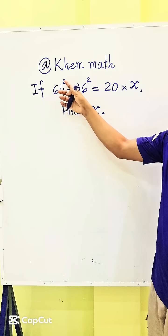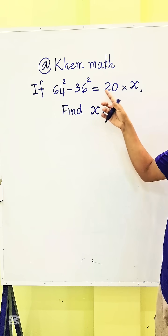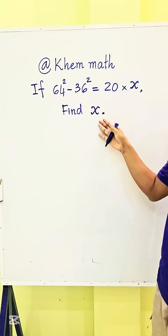If 64 squared minus 36 squared equals 20 times x, find x.